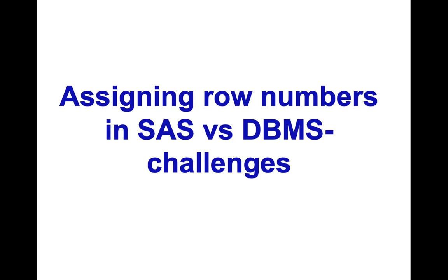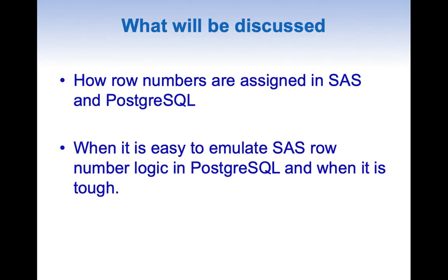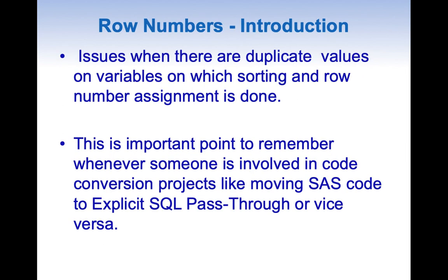In this video I will be talking about how to assign row numbers in SAS versus database and what are the challenges. How row numbers are assigned in SAS and how are they assigned in Postgres. When it is easy to emulate SAS row number logic in Postgres and when it is really tough. This issue is especially very important when there are duplicate values on the variables on which sorting and row number assignment is done.